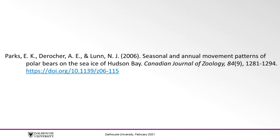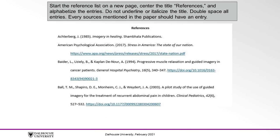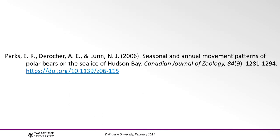Here is an example of a standard APA citation for an electronic journal article. You can also find it in the tutorial transcript. Your references on your reference list should be alphabetized and use a hanging indent, which means that the second line and any subsequent lines are indented. Now let's talk about the citation.